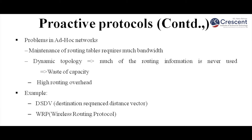Maintaining the routing table requires much bandwidth. Because of the dynamic topology, much of the routing information is never used, so a lot of capacity is wasted, resulting in high routing overhead. Examples of proactive protocols are Destination Sequence Distance Vector and Wireless Routing Protocol.